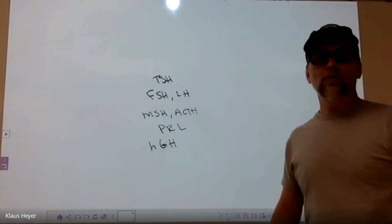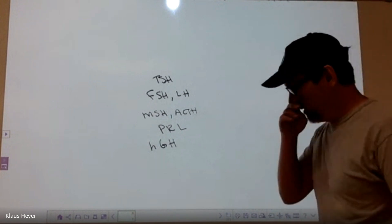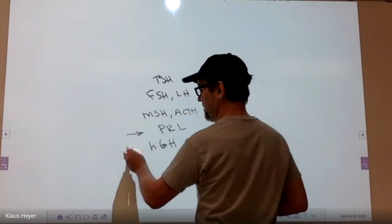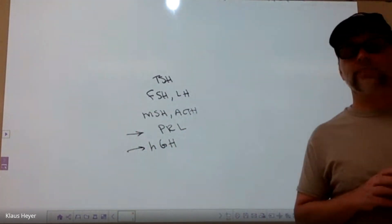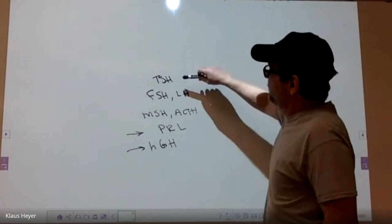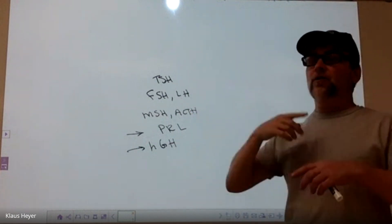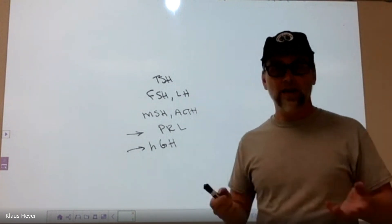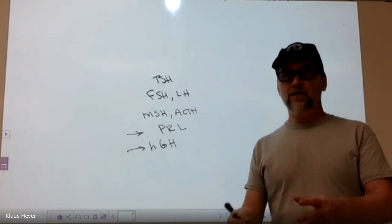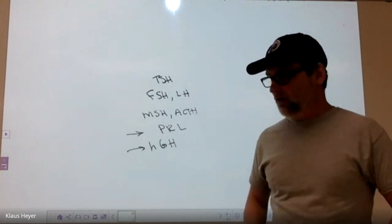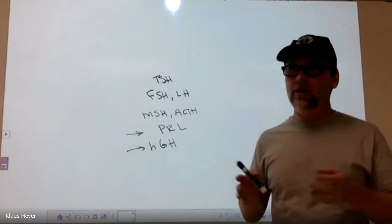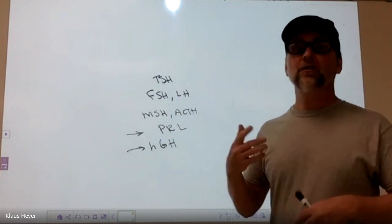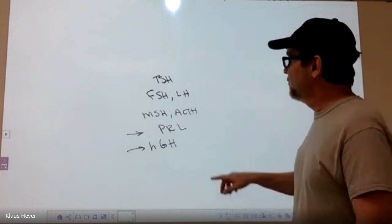All of these hormones work on negative feedback except for two of them — this one and that one. We used the example of TSH earlier: when everything's fine there's no more process — that's negative feedback. Once the negative thing has been mitigated or nullified, the process stops. That's not the actual definition of negative feedback, but you get what I'm saying — the circle stops.